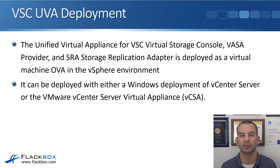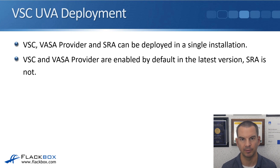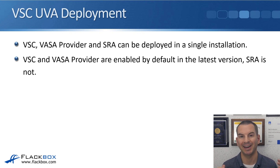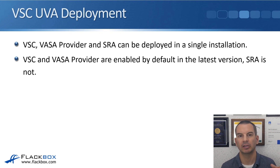The UVA can be deployed with either a Windows deployment of vCenter Server or the newer VMware vCenter Server Virtual Appliance, the VCSA, which runs as a Linux-based virtual machine. VSC, VASA provider, and SRA can be deployed in a single installation. Before the UVA was available, these were three separate pieces of software that had to be installed and configured separately. Now that the UVA is available, it includes all three, so you just do one installation — making things a lot more convenient.